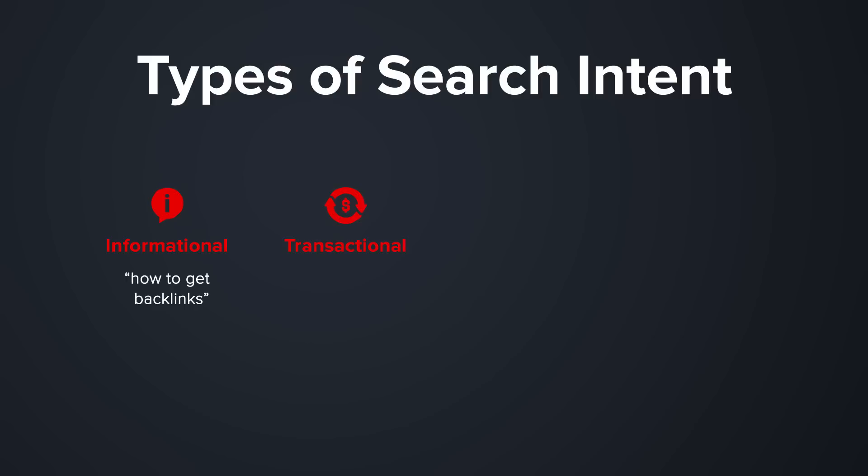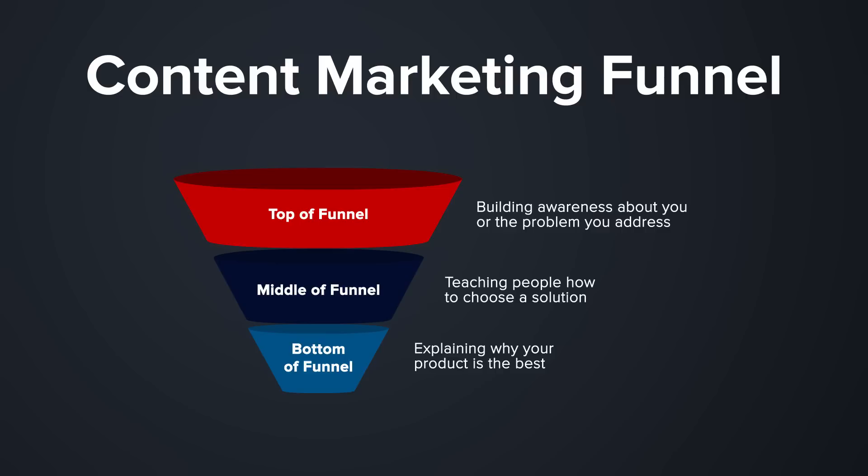Number seven: does your page satisfy search intent? There are four primary categories of search intent. Number one is informational, such as "how to get backlinks." Number two is transactional, such as "buy backlinks." Number three is comparison queries, like "Moz vs. Ahrefs." Number four is navigational, like "Gotch SEO." Understanding the intent behind your target keyword should dictate how you structure your page. If you're targeting a keyword with informational intent, that page should educate and build rapport — most searchers are not ready to buy at that stage, so structure your page as an educational resource.